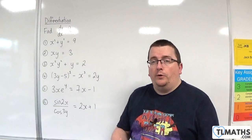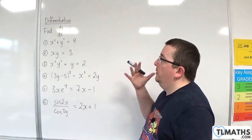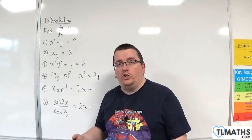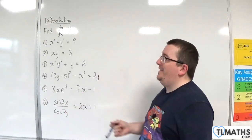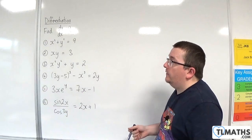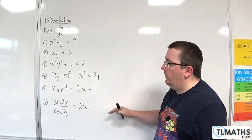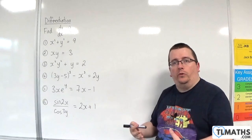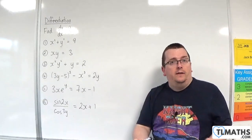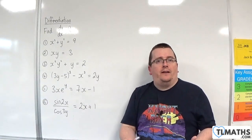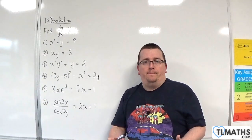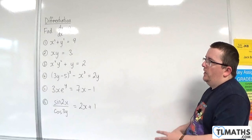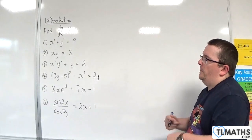In this video, I'm going to go through some examples of using implicit differentiation to find dy by dx. In each of these cases, I want to find dy by dx equals something in terms of x and y — that's my target. So let's take a look at number one.